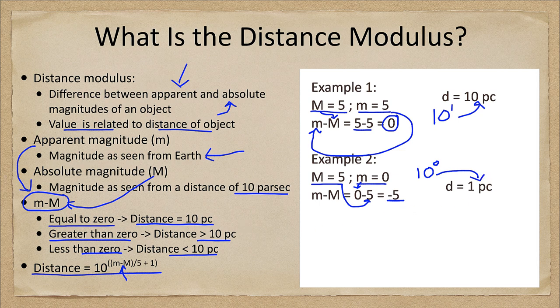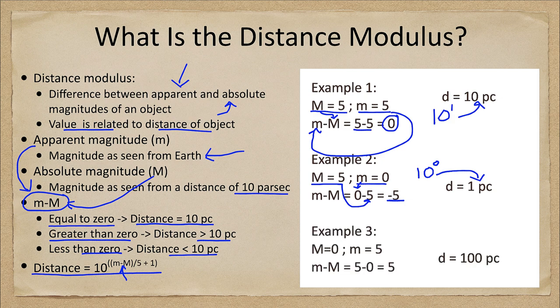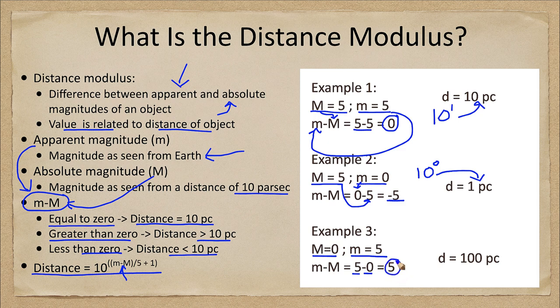One more example we can look at. Let's take a look at 3 here and we have now an absolute magnitude of 0 and an apparent magnitude of 5, so we do the same thing here except now we're taking the apparent magnitude of 5 subtracting 0 giving us 5.